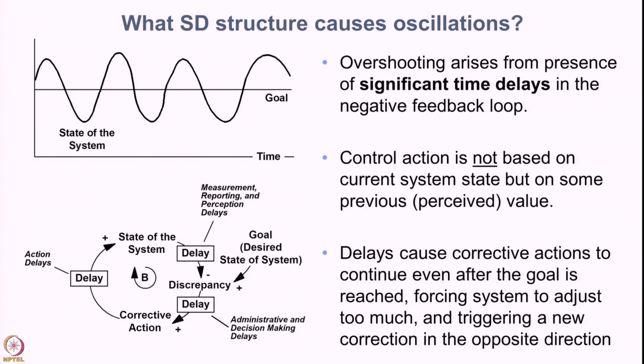Now, what are the system dynamics structures that cause such oscillations? The graph on the top left illustrates typical oscillatory behavior, where the system state overshoots and then undershoots the goal of the system, represented by a horizontal line.